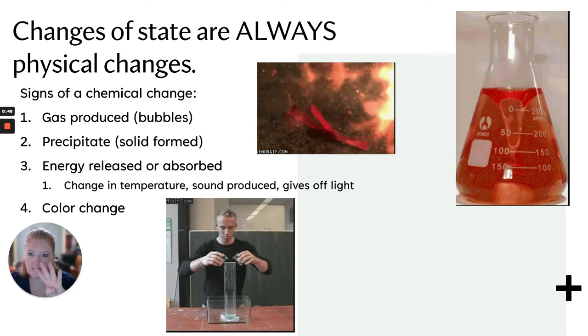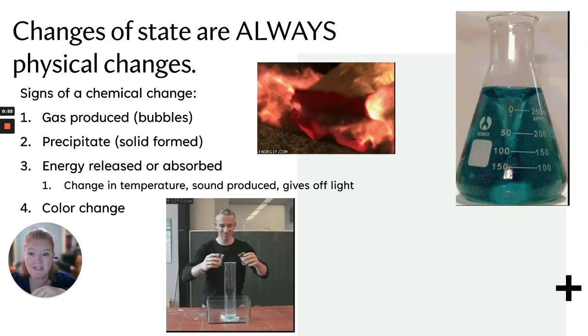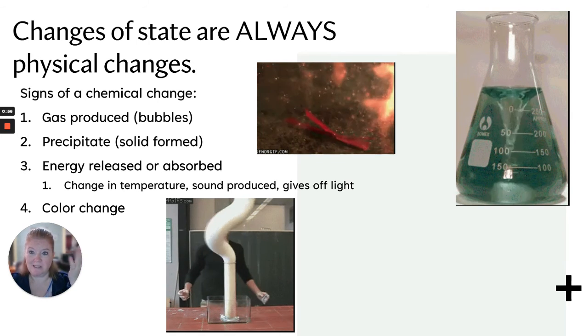There are four key signs of a chemical change. You may get a gas produced, see bubbles. You may get a precipitate, that's a solid that formed. You mix two liquids, you get a solid.